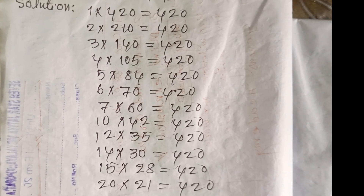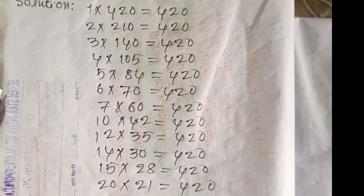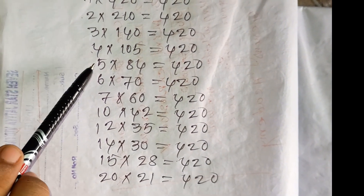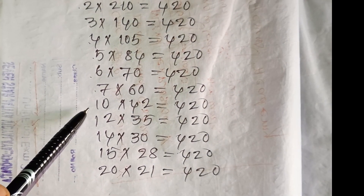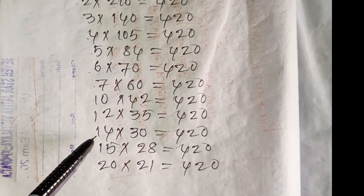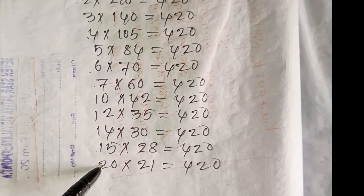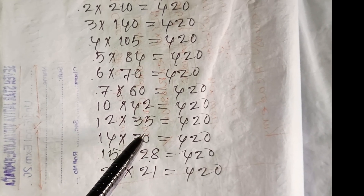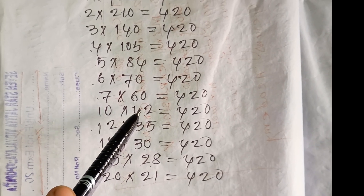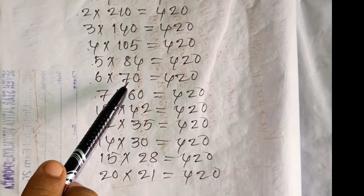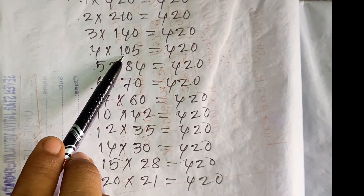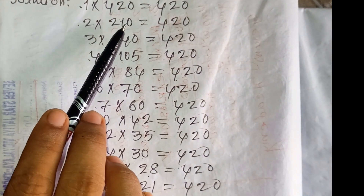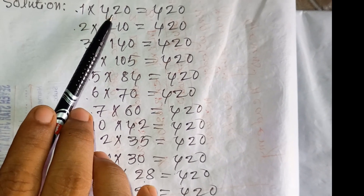The factors of 420 are 1, 2, 3, 4, 5, 6, 7, 10, 12, 14, 15, 20, 21, 28, 30, 35, 42, 60, 70, 84, 105, 140, 210, and 420.